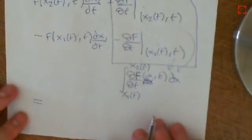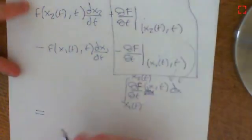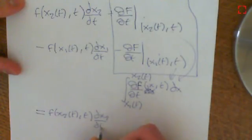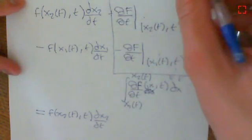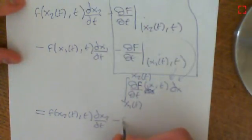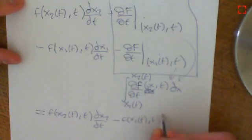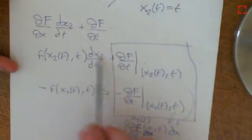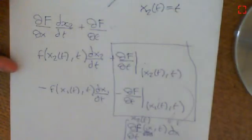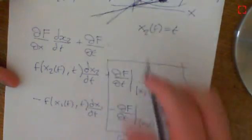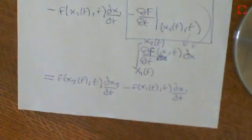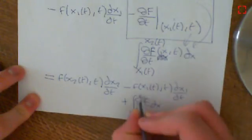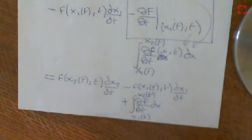Putting it all together — that term, minus that term, plus this integral — we recover the Leibniz rule, which we also derived in a previous video using intuitive methods. This derivation relies on the second fundamental theorem of calculus, proven for both Riemann and Lebesgue integrals. Some steps, like the commutativity of antidifferentiation in x and differentiation in t, weren't proven here, but it's a nice confirmation that two separate approaches yield the same result.